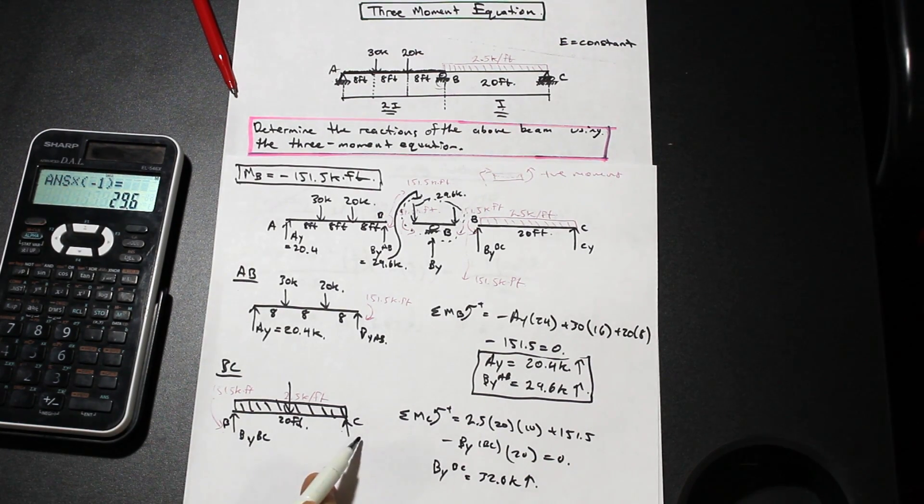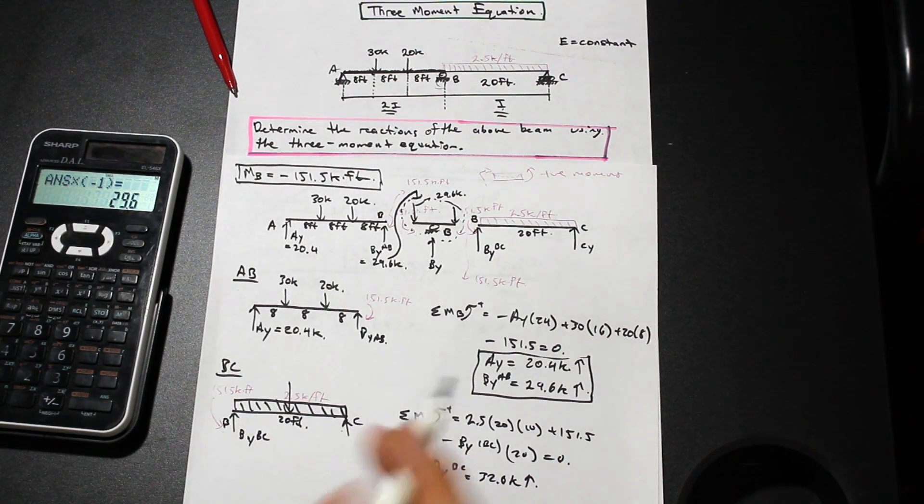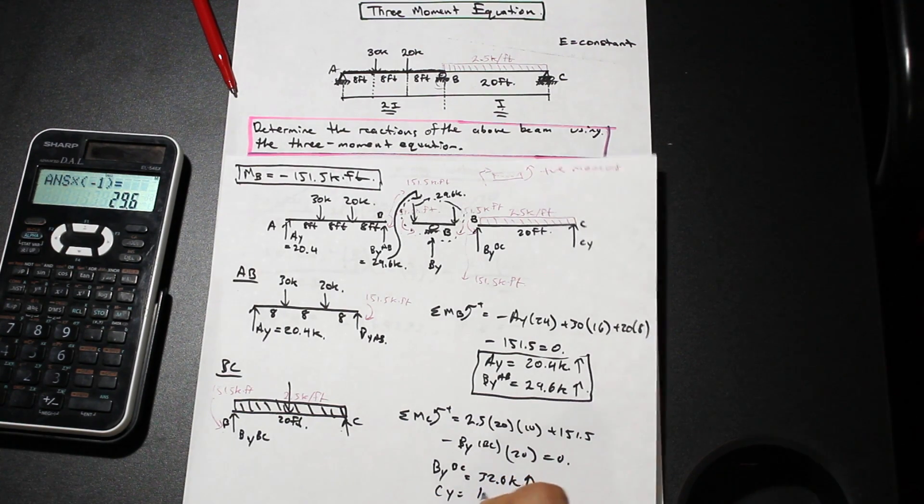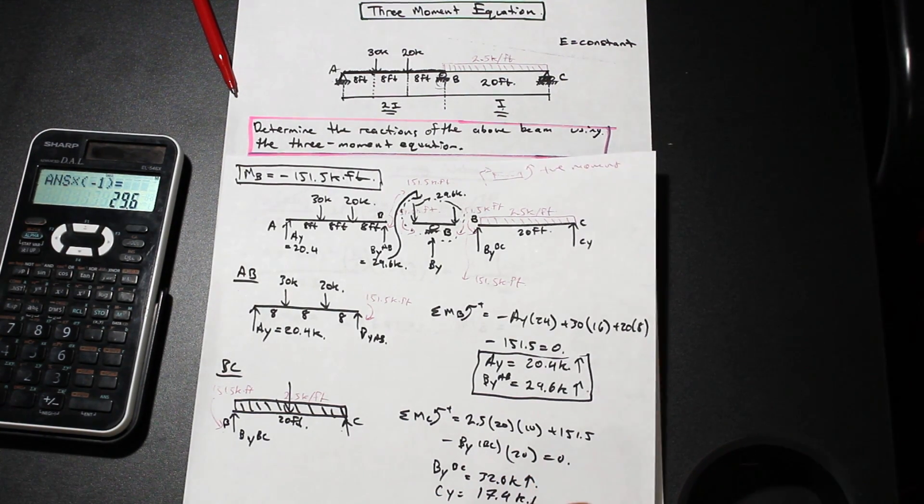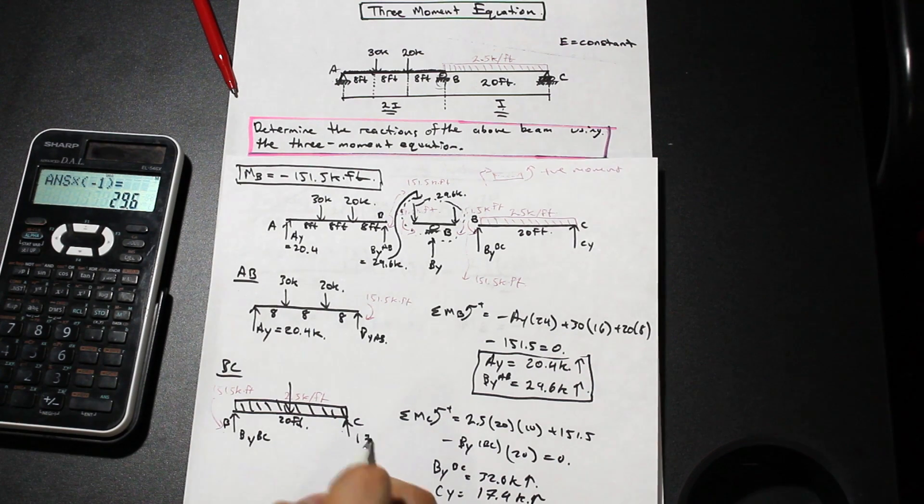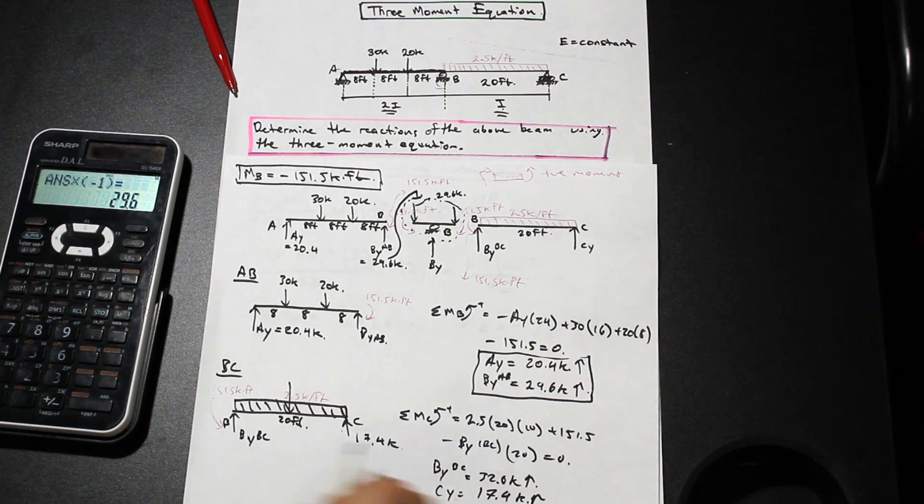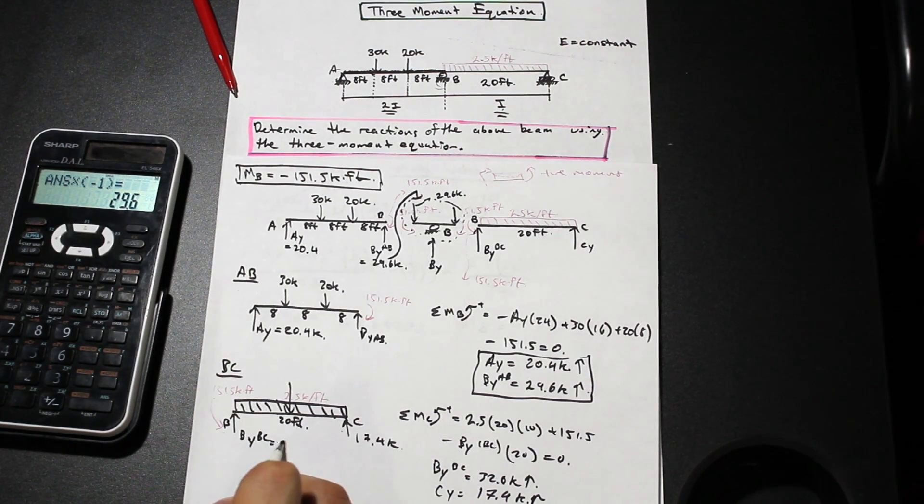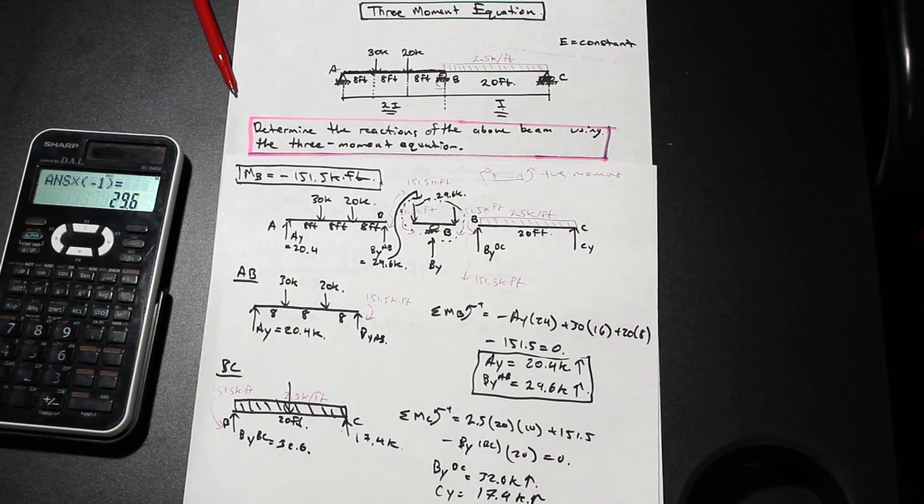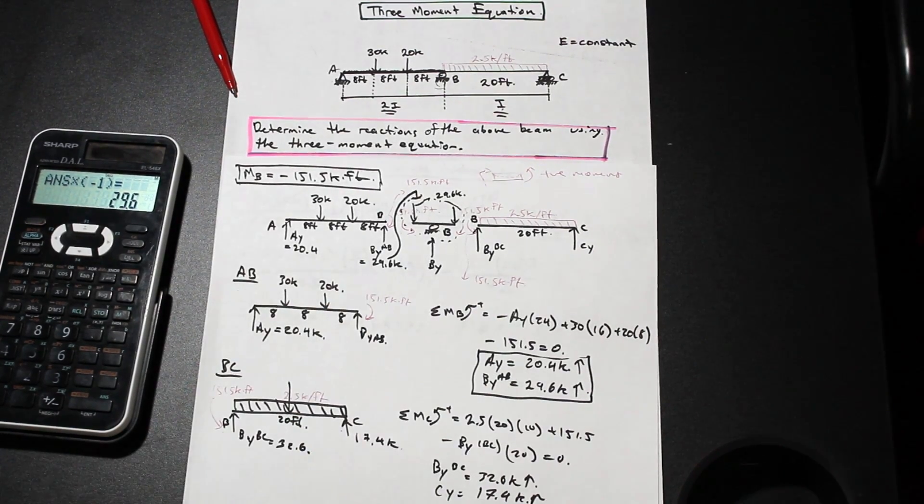If we take the summation of forces, we're going to find that CY is 17.4 kip up. So this is 17.4 kip and this here is 32.6. Now we have everything that we need in order to solve the reaction at BY which was our initial problem we couldn't find.